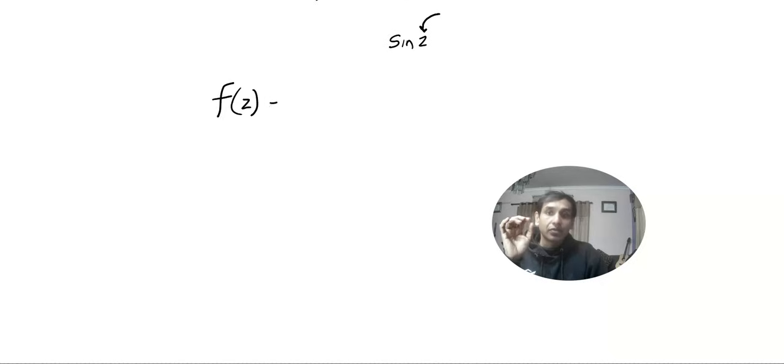First of all, you have to understand, when I talk about a function like Z square or maybe Z cube or E to the power Z, every input will have only one output. This is called a single-valued function. That means one input, one output. But if I consider the complex function Z to the power 1 by 5, for every input, I will get 5 outputs. So this is a multi-valued function. Right now, we will talk only about the single-valued functions.